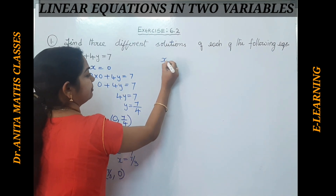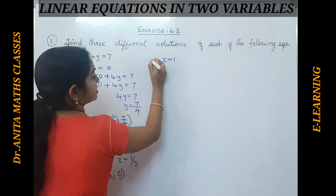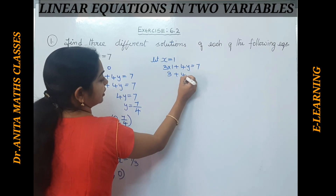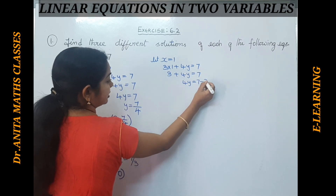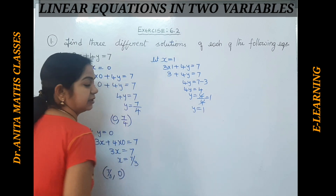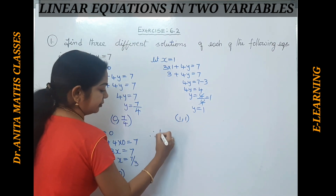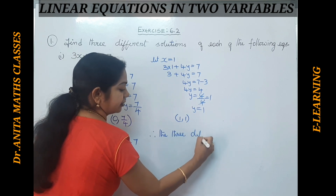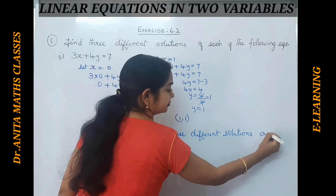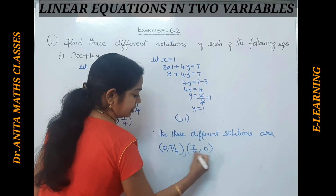For the third solution, let x equal to 1. Substituting: 3 into 1 plus 4y equals 7, so 3 plus 4y equals 7, giving 4y equals 4, and y equals 1. The ordered pair is (1, 1). Therefore the three different solutions are: (0, 7/4), (7/3, 0), and (1, 1). Although we have many solutions, only three are required here.